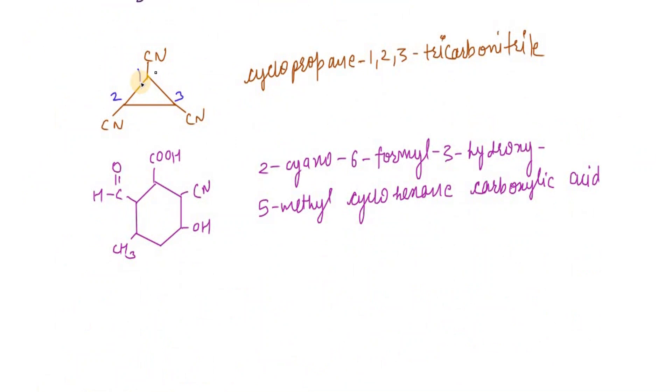Now we talk about this compound. We know that the most prior functional group is carboxylic acid. Then we put 1, 2, then it is 3, then 4, then 5, then 6. So 2-cyano, 6-formyl, 3-hydroxy, 5-methyl cyclohexane. So how are all these arranged?